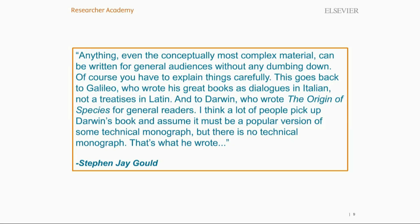He shares with us: 'Anything, even the conceptually most complex material, can be written for general audiences without any dumbing down. Of course you have to explain things carefully. This goes back to Galileo, who wrote his great books as dialogues in Italian, not as treatises in Latin, and to Darwin, who wrote the Origin of Species for general readers. A lot of people assume it must be a popular version of some technical monograph, but there is no technical monograph — that is what he wrote.'